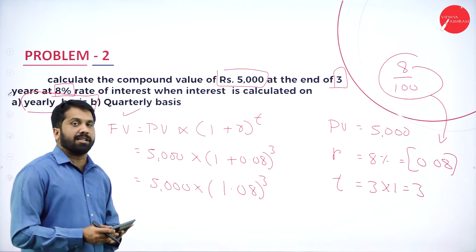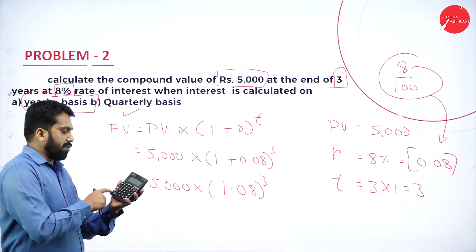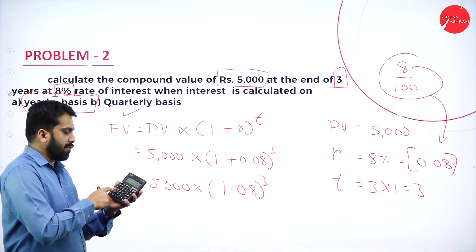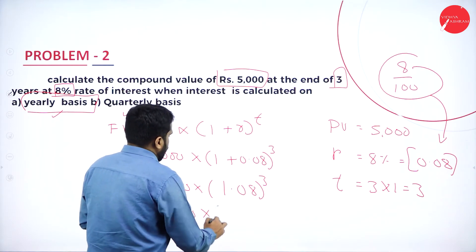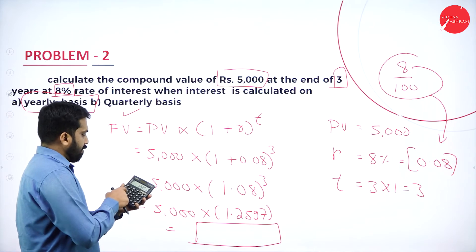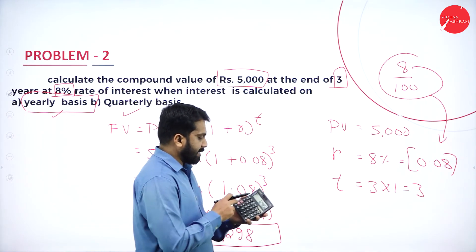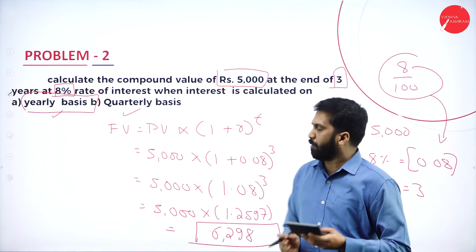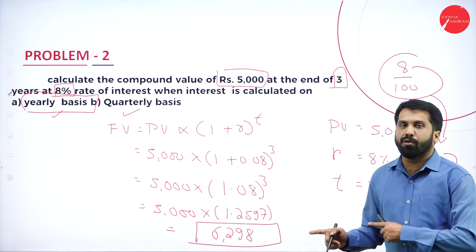Calculate (1.08)^3: 1.08 × 1.08 × 1.08 = 1.2597. Therefore FV = 5,000 × 1.2597 = 6,298 rupees (approximately 6,299). On yearly basis, the future value is 6,298 rupees.